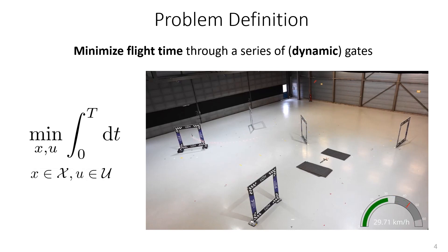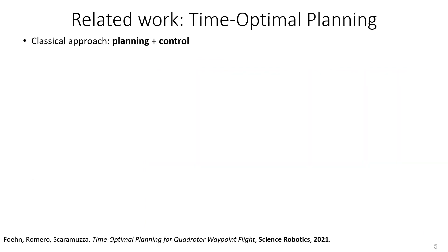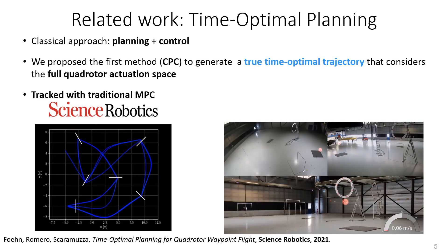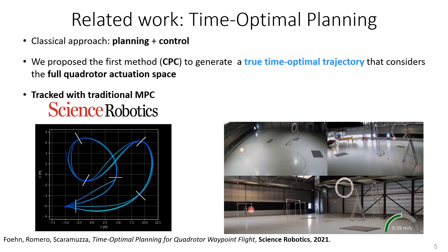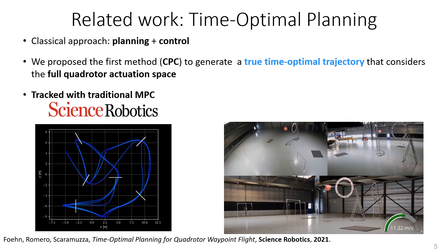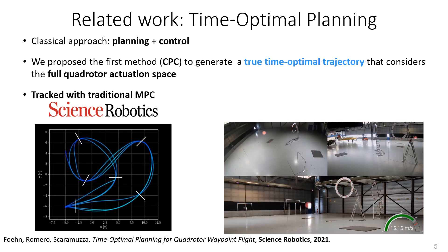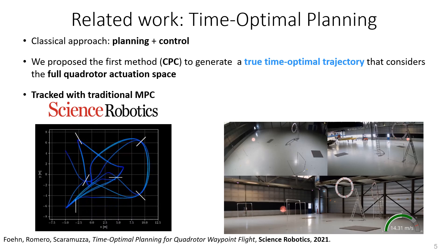Different approaches are possible. Classical approaches need to first generate a path, which is the planning task, and then track it, which is the control task. Existing approaches for multi-waypoint trajectory planning have either been based on polynomials that are smooth by definition, or have only used a simplified quadrotor model. Using numerical optimization, we have developed the first method that is able to generate a true time-optimal trajectory that exploits the full quadrotor actuation space. For the first time, we were able to outperform a professional human pilot in a drone race.